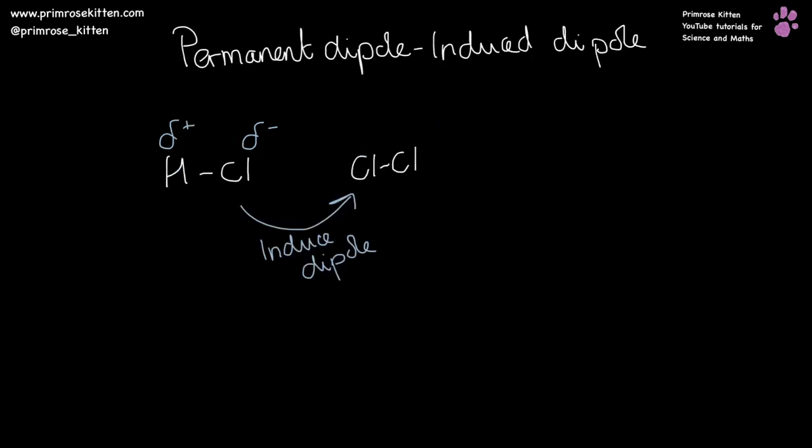A permanent dipole-induced dipole is where we have something with a permanent dipole, like hydrogen chloride, and it can then induce a dipole in something else, setting up the permanent dipole-induced dipole interaction.